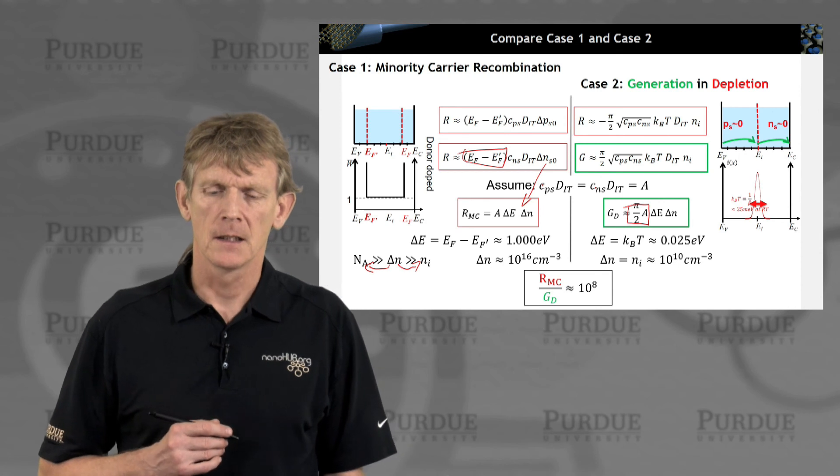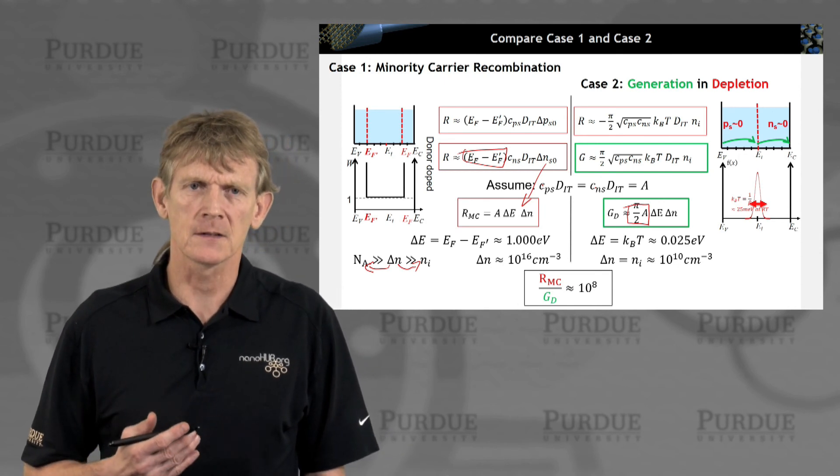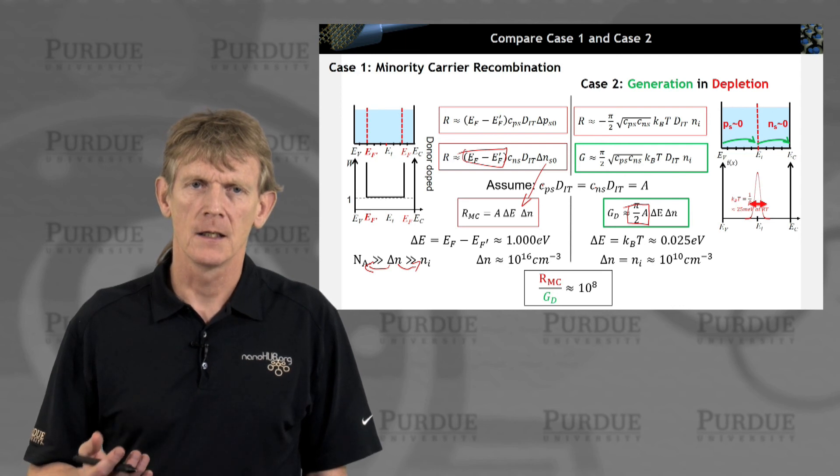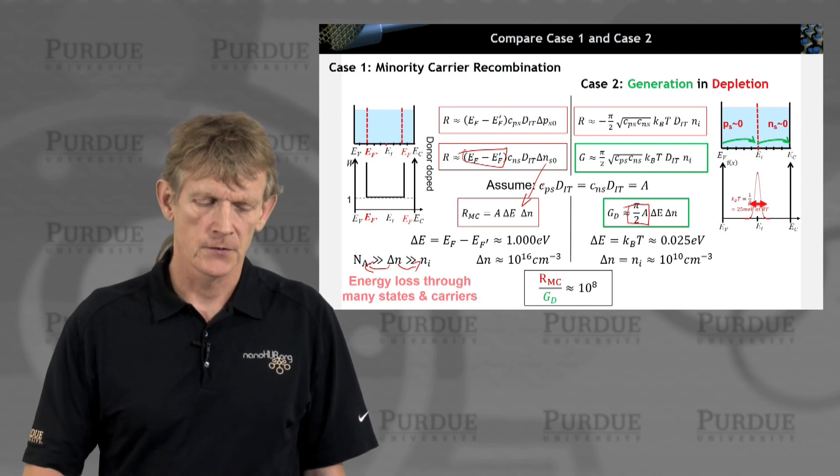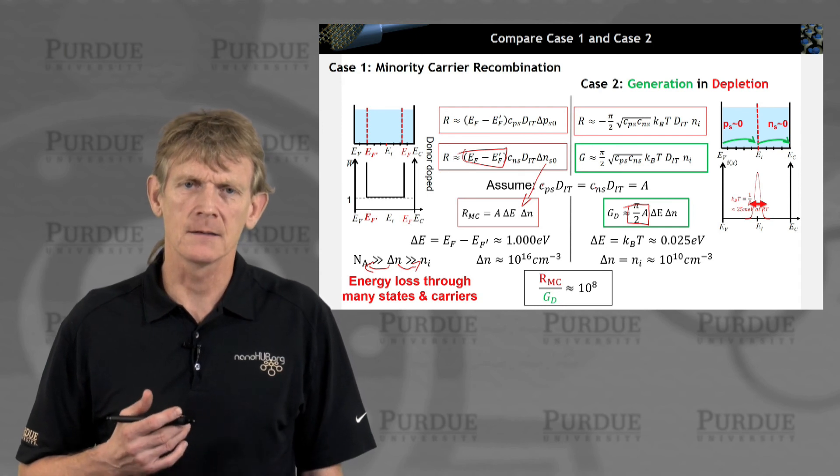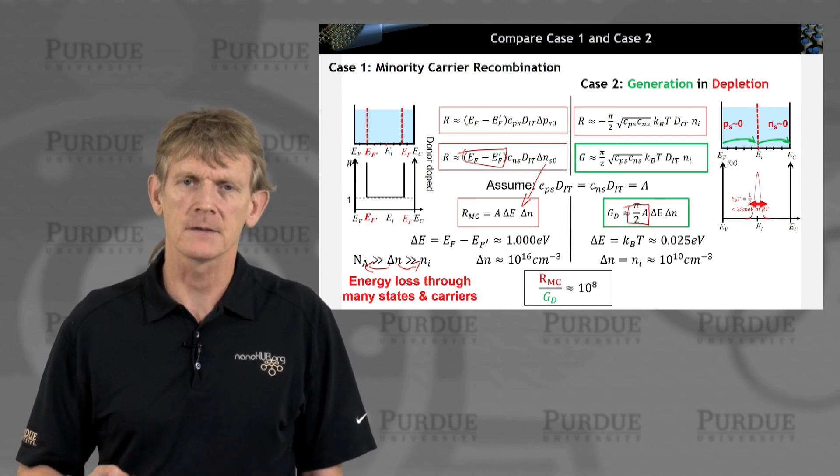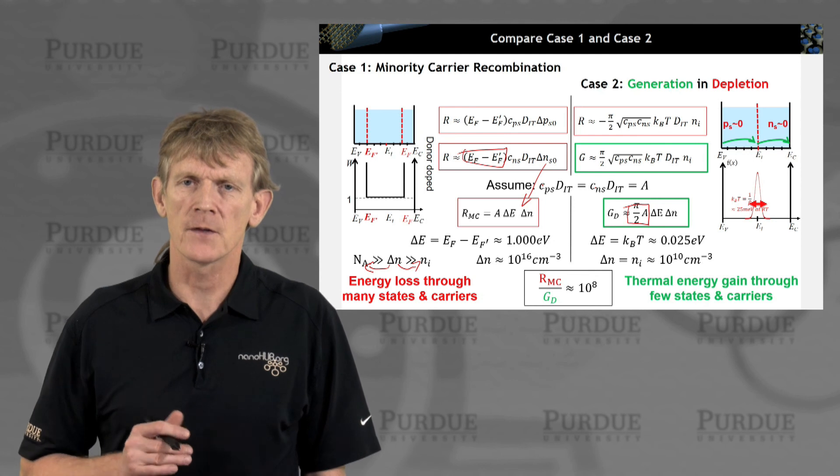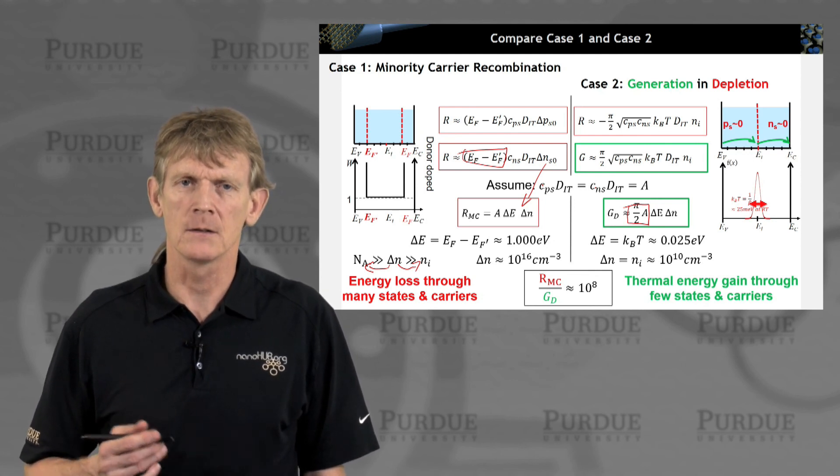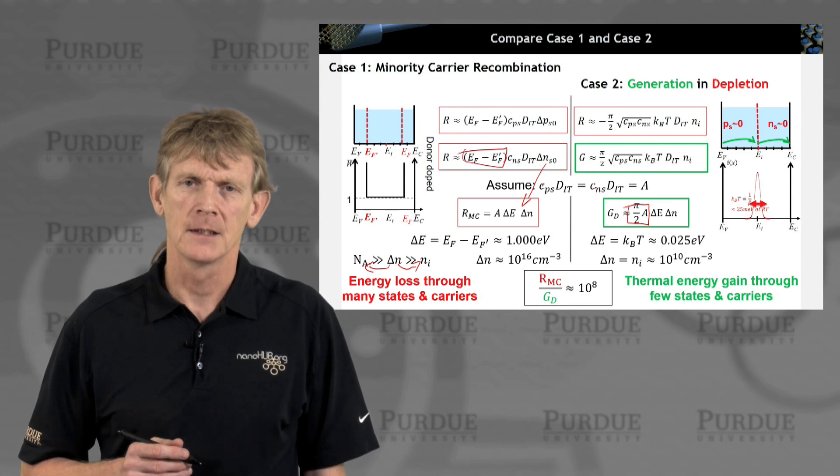They're quite significantly different. That gives you some insight as to the intensity of the reestablishment of equilibrium. Here, you have energy loss through many states and many carriers on the left. Here, you have thermal energy gain through a few states and a few carriers at mid, mid-gap.